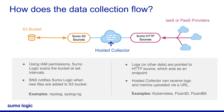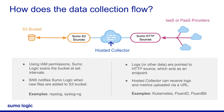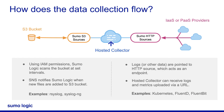For HTTP, logs or other data are pointed to the HTTP source, which acts as an endpoint, and the logs are uploaded to a hosted collector. For example, rsyslog and rsyslog-ng can send data directly to the cloud syslog server, though this cannot work for network devices as it requires an authentication token. For Kubernetes data collection, Fluentd and Fluent Bit with plugins send logs and point to the HTTP source.